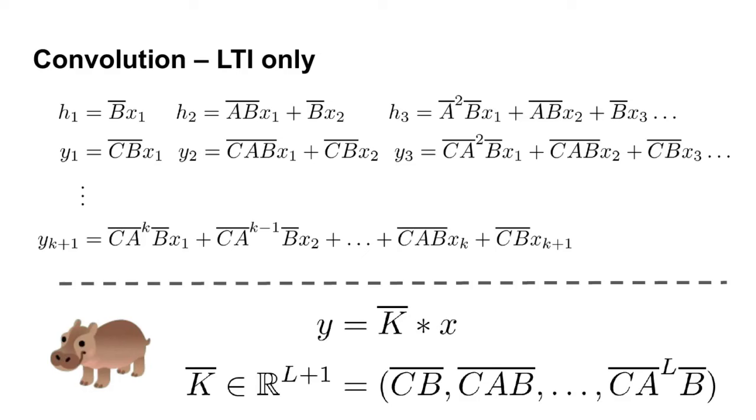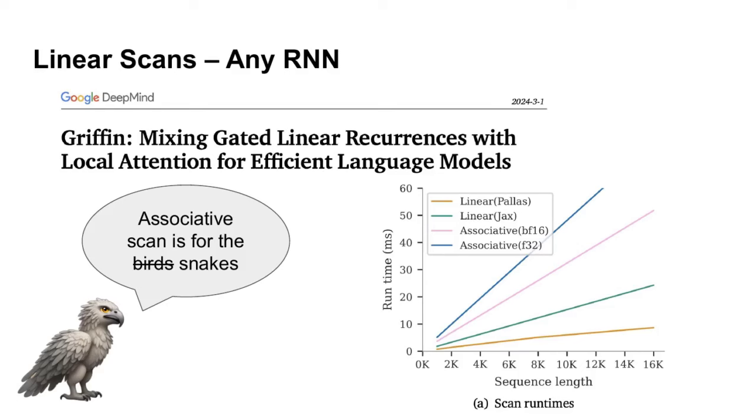And when we take this convolutional perspective, at train time, we can now efficiently compute this in parallel as a convolution between some k-bar vector, which we show here, and the input x. Alternatively, there are recent works that throw out this entire notion of the parallel scan and compute things just as a linear scan as they find it is more effective on certain hardware such as TPUs.